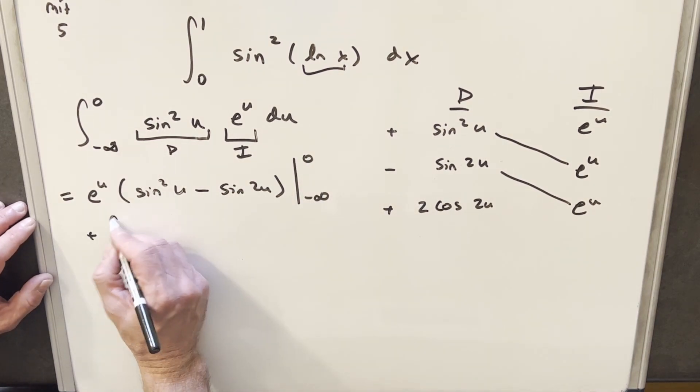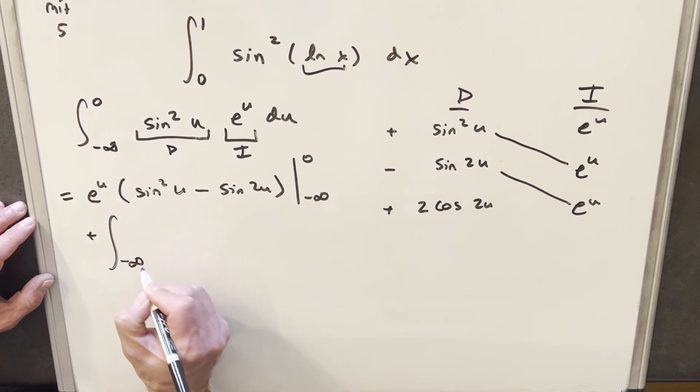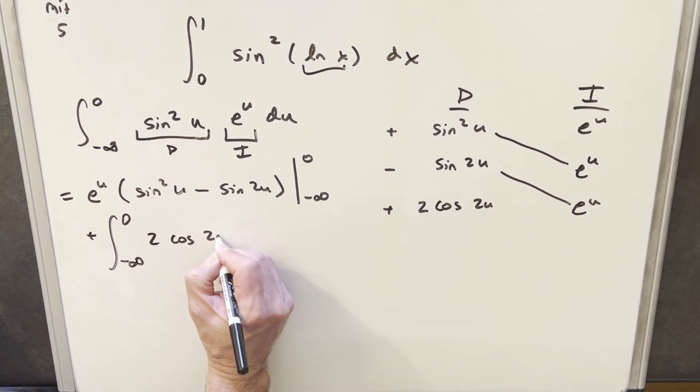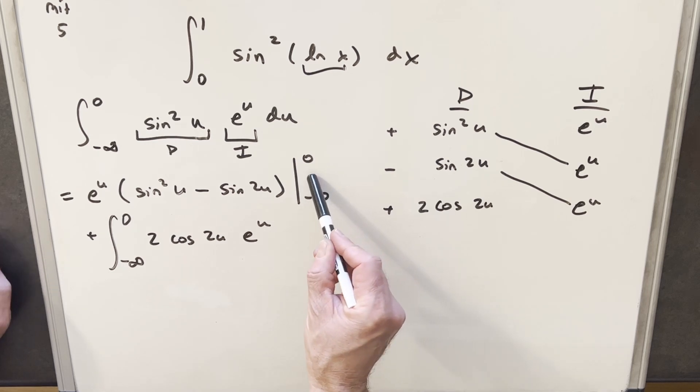And then this row is going to be an integral. So we're just going to have 2 cos 2u e to the u.